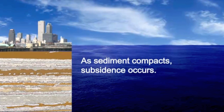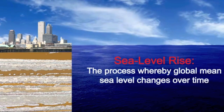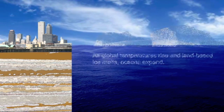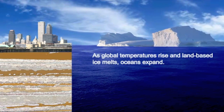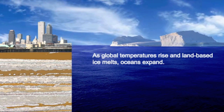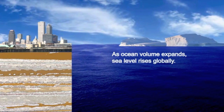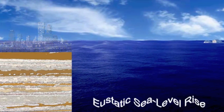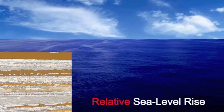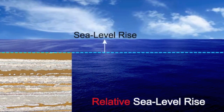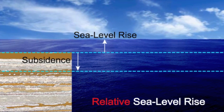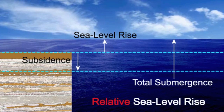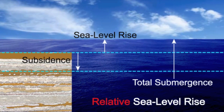Buildings and other structures also sink along with the soil surface. The other process contributing to land loss is sea level rise. As global temperatures rise and land-based ice melts, oceans expand, and sea level rises globally. This is known as eustatic sea level rise. Relative sea level rise is the combination of eustatic rise in sea level and land movement, and is unique for each location. The combination of the two processes determines the rate of submergence in each coastal area.